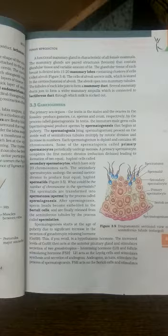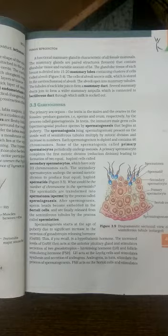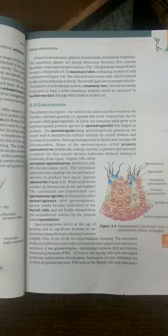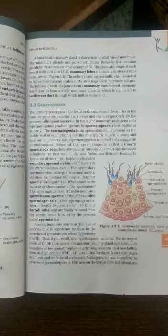Next is gametogenesis. The primary sex organs—the testes in the male and ovaries in the female—produce gametes: the sperm and the ovum respectively, by the process of gametogenesis. In testes, the immature male germ cells produce sperms by spermatogenesis that begins at puberty.